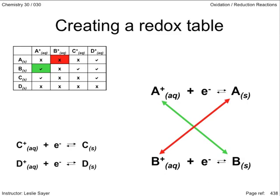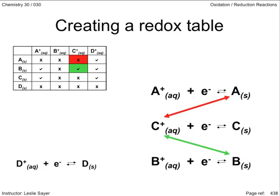The C ion, according to the data table, reacts with B metal and the D metal, but not with the A metal. So looking at the A and B equations I've already arranged, that means the C ion must be positioned above the B metal, because it reacts with the B metal, but below the A metal, because it doesn't react with the A metal.